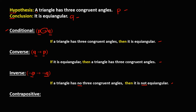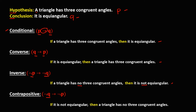For the contrapositive, that's the negation of Q implies the negation of P. So for the negation of Q: if it is not equiangular, then for the negation of P: a triangle has no three congruent angles. So this is now how to write a contrapositive of this conditional statement.